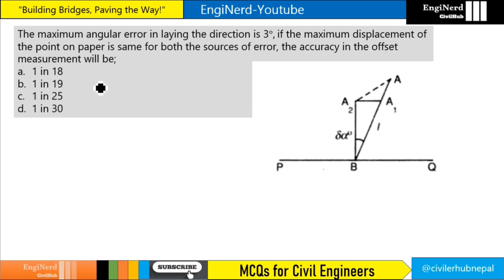Hello everyone, welcome to Engineered. Today we will be solving a problem related to engineering survey. This problem asks us to calculate the accuracy in offset measurement. It says the maximum angular error in laying the direction is 3 degrees, with the maximum displacement of the point on paper being the same for both sources of error. The accuracy in offset measurement will be — options are given, we need to select one.